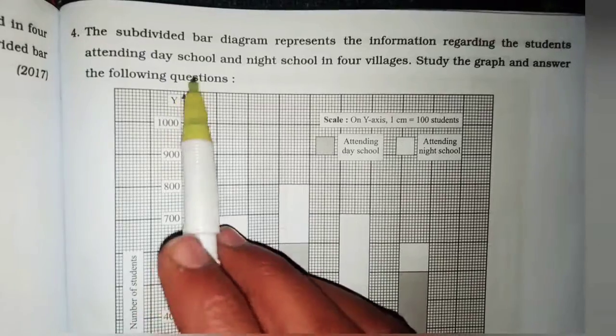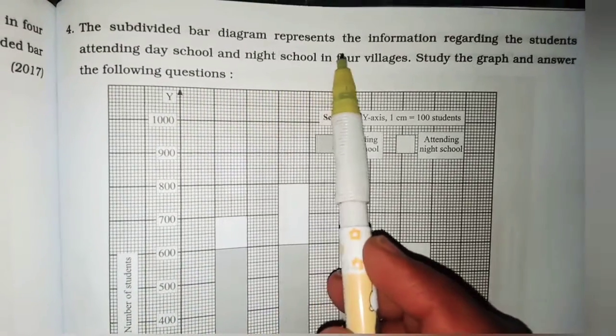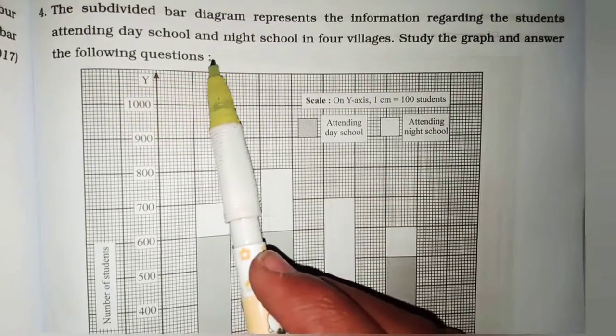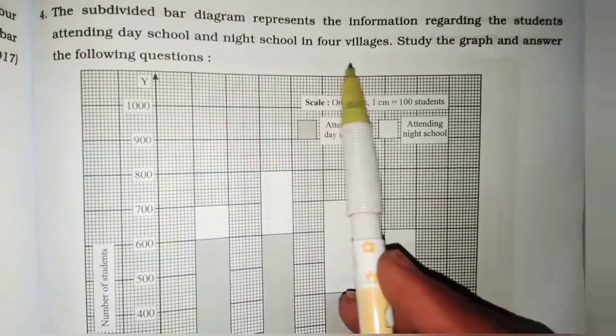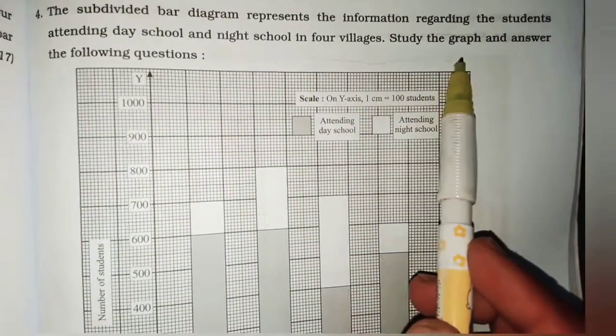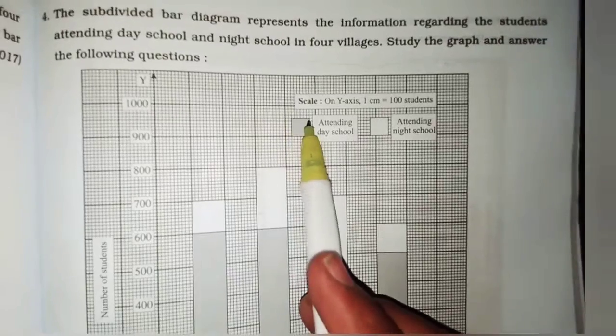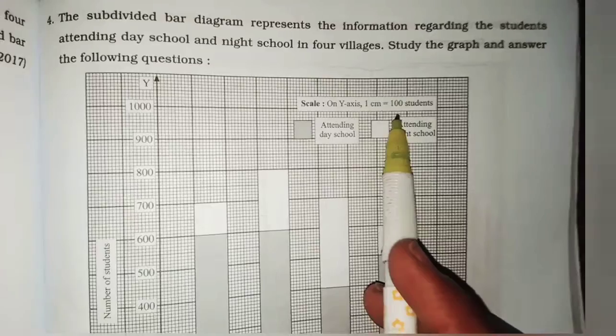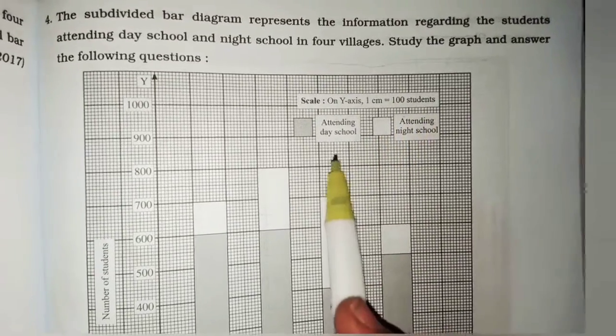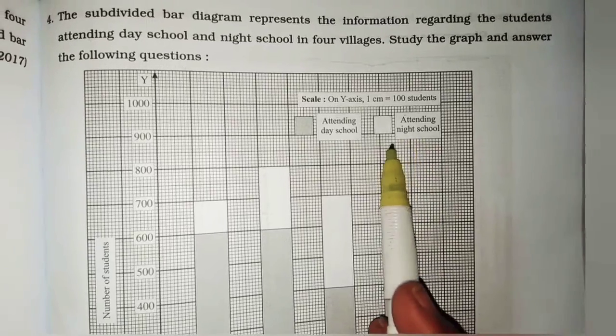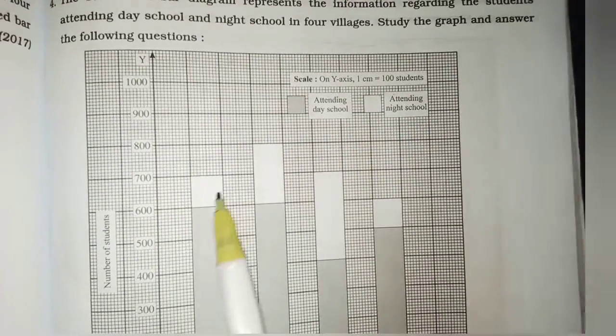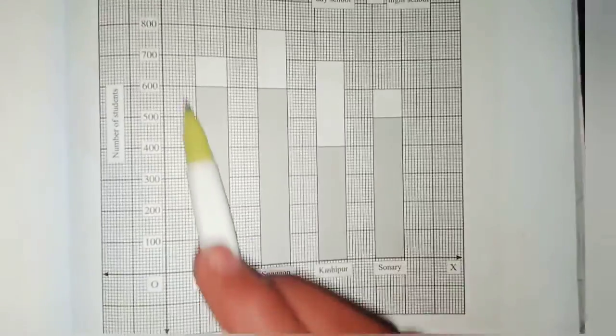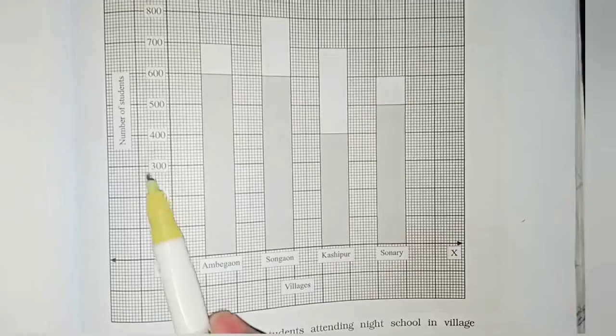Fourth. The subdivided bar diagram represents the information regarding the student attending day school and night school in four villages. Study the graph and answer the following question. Scale on y-axis 1 cm, 100 student attending day school and night school. 1 cm, 100 student आहे.